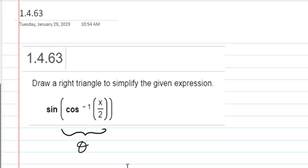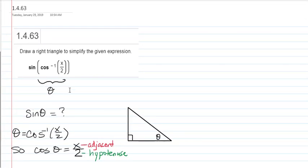And the important thing to remember is that when you're taking the sine of something, you're taking the sine of an angle. So I'm going to call that angle theta. So the argument, the entire argument, inverse cosine of x over 2, is some angle. And we're looking for what is sine of that angle theta.